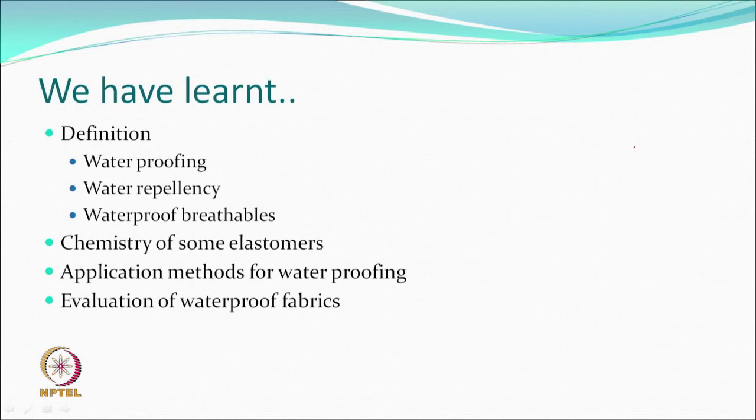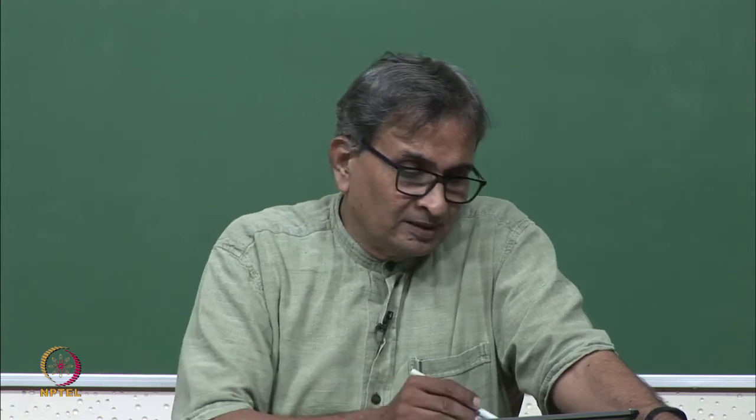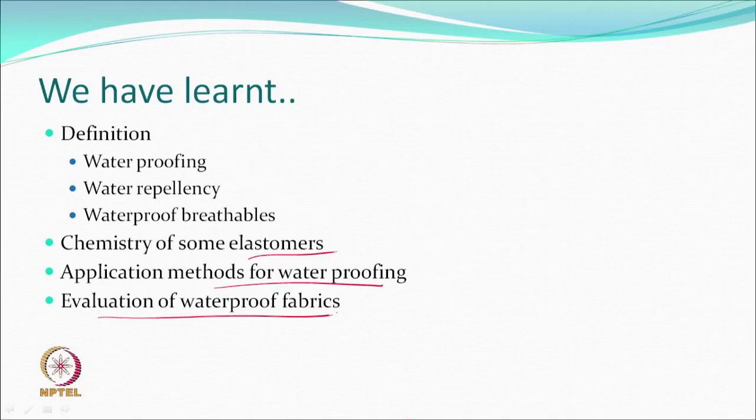So what have we learned today? We learned the definitions of waterproofing, water repellency, and waterproof breathables. We talked about the chemistry of some elastomers that can be used as coatings on textile surfaces, and the knife-on-air and knife-on-roller direct coating methods. We also covered how waterproofness can be evaluated. Next time we will talk about water repellency — till then, all the best.